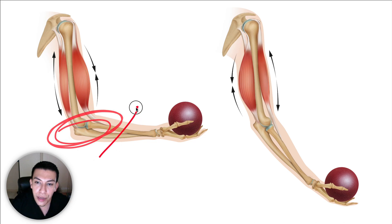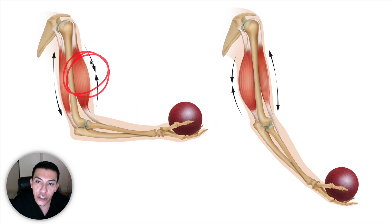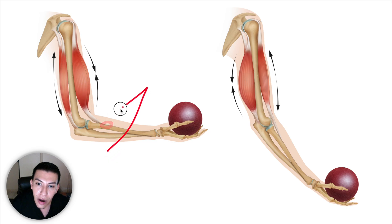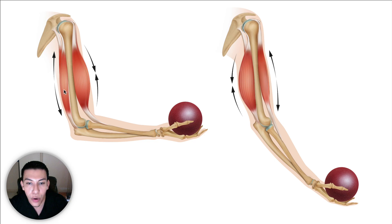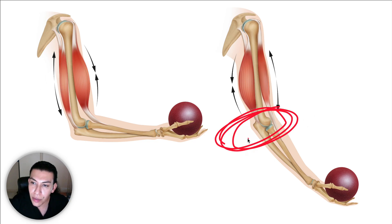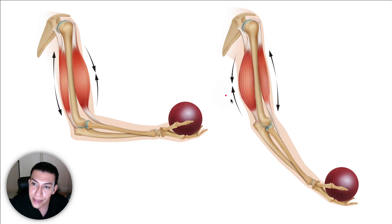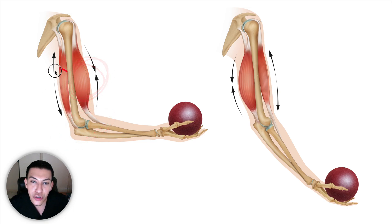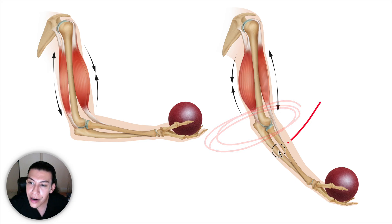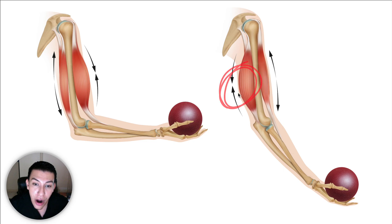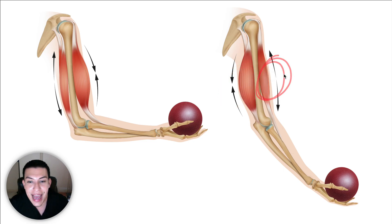During flexion at the elbow — meaning we are bringing the arm up and it's weight bearing — the biceps brachii are shortening. Notice how the two arrows are coming together, meaning this muscle attaches to the scapula and also to the radius, bringing the arm up. The triceps brachii are lengthening; those arrows are going apart. Now during extension at the elbow, the biceps brachii are lengthening and the triceps brachii are shortening. So in flexion at the elbow, the biceps brachii are our agonist and the triceps brachii are our antagonist. During extension, it switches — the triceps brachii are the agonist and the biceps brachii are the antagonist.